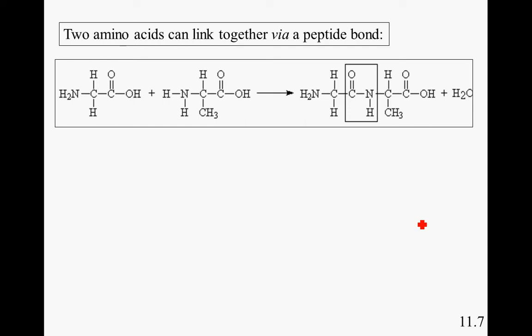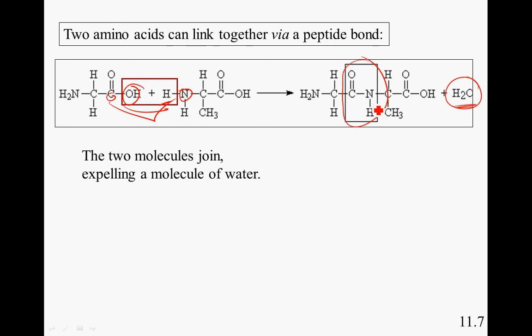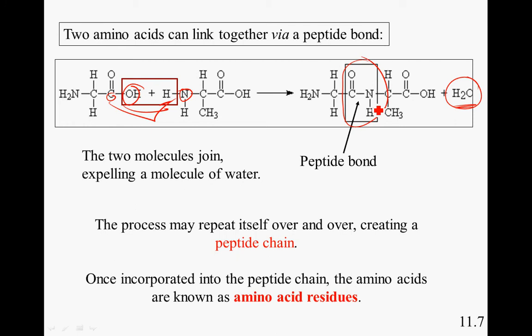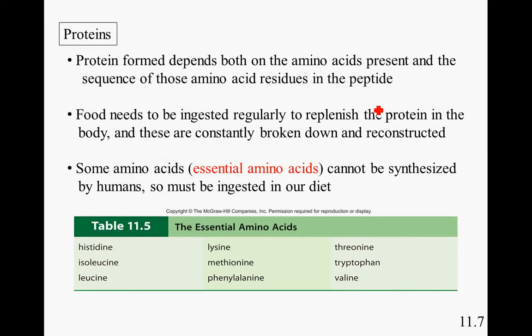When two amino acids come together, water is given off and a peptide bond is formed. The OH and hydrogen come together to release water, and the nitrogen and carbon come together to form the peptide bond. This process may repeat itself over and over, creating a peptide chain. Once incorporated into the peptide chain, the amino acids are known as amino acid residues. The protein formed depends on both the amino acids present and the sequence of those amino acid residues.